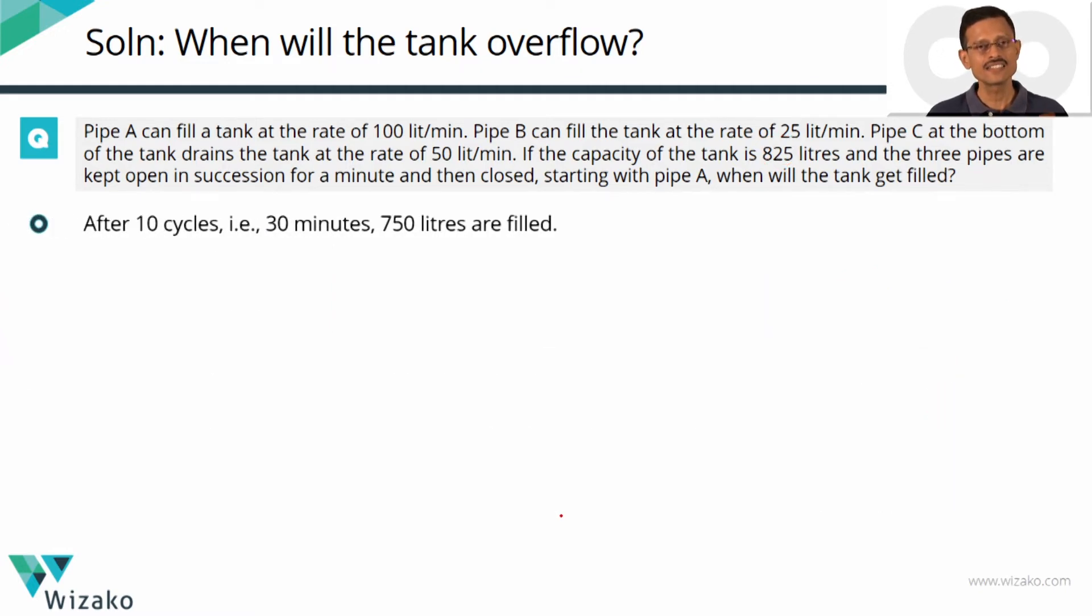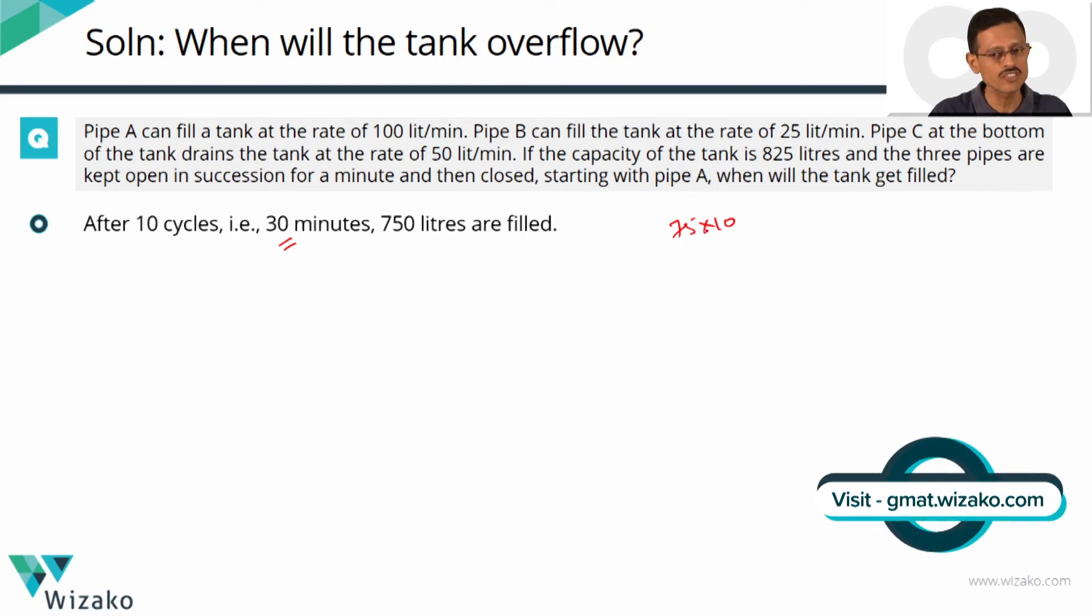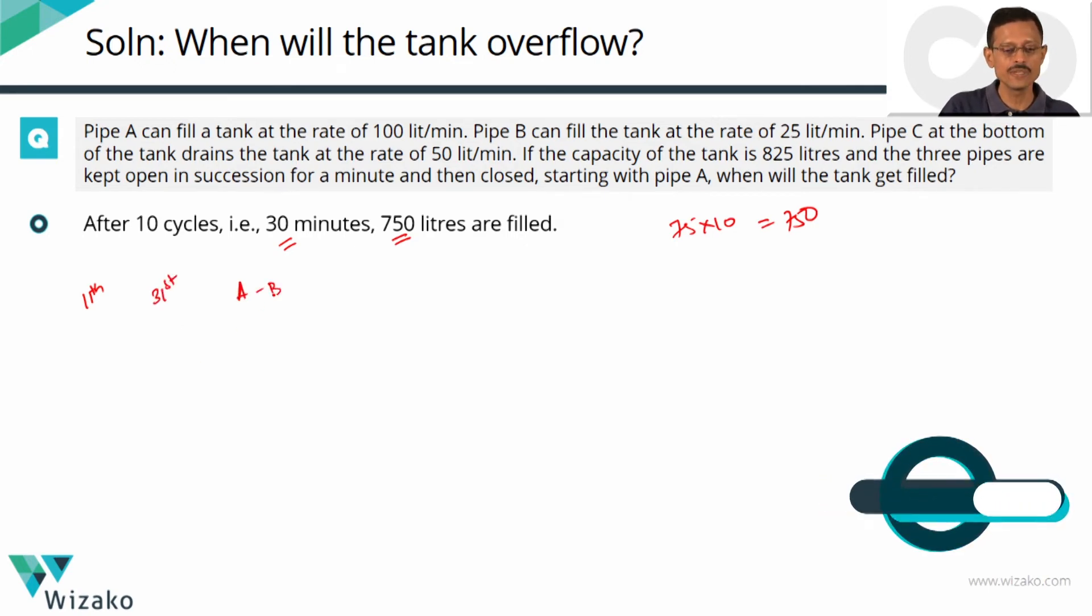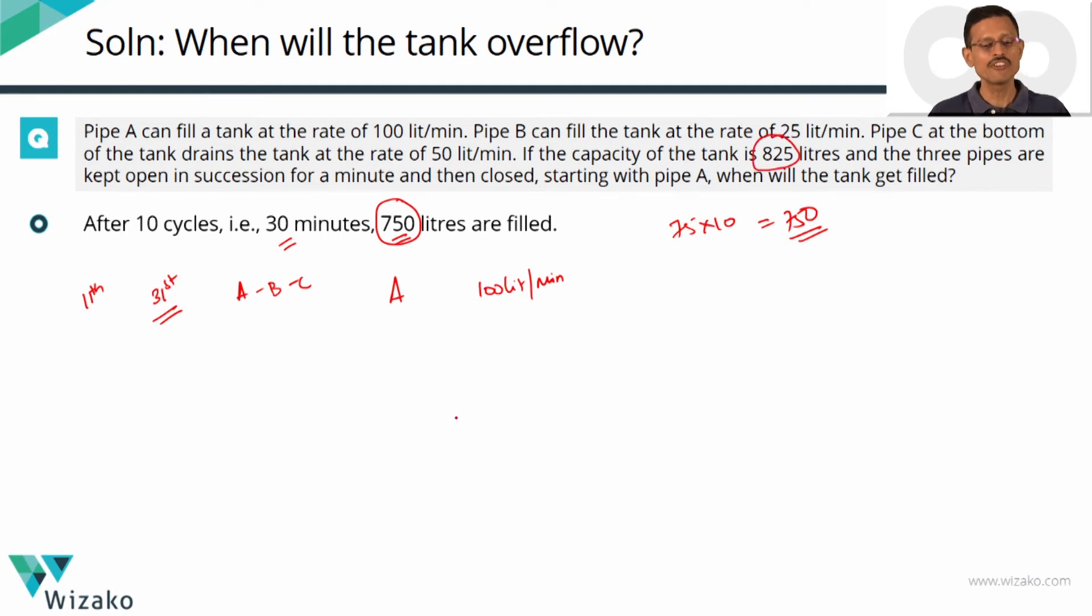At the end of the 10th cycle each cycle is 3 minutes that is 30 minutes you'll have 75 into 10. Each cycle leaves you with 75 liters of water. 750 liters of water will be there in the tank. Let's start the 11th cycle. 11th cycle first minute of that cycle which is the 31st minute. The cycle runs as ABC. So the 31st minute we're going to be having pipe A kept open. What does pipe A do? Pipe A fills 100 liters into the tank every minute. At the end of the 30th minute 10 cycles we know 750 liters are there in the tank. The capacity of the tank is 825 liters.